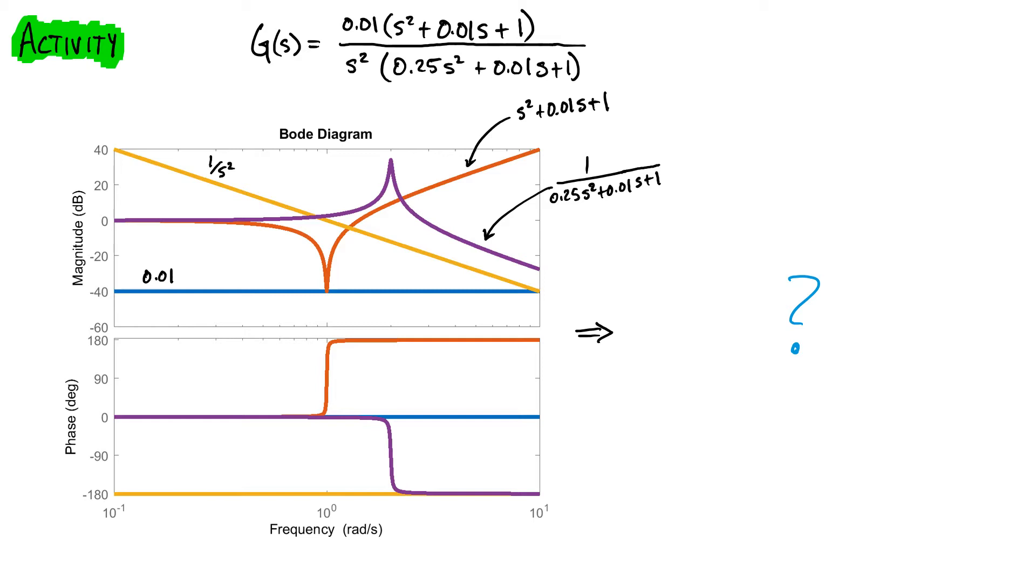So here I've gone ahead and used MATLAB's Bode command in order to plot each one of these. So the really important thing is that I'd like you to have a basic sketch. You should have this kind of vaguely in there. You know that it goes down at 40 dB per decade and you know where that intersection happens.